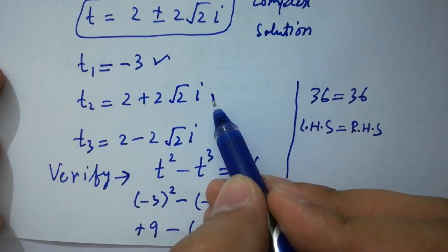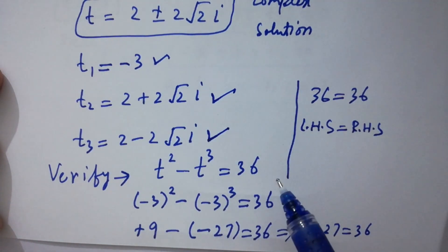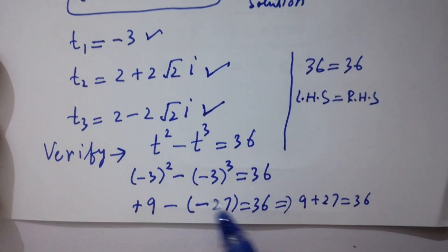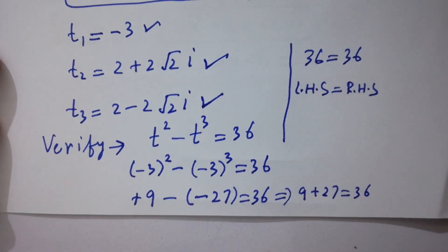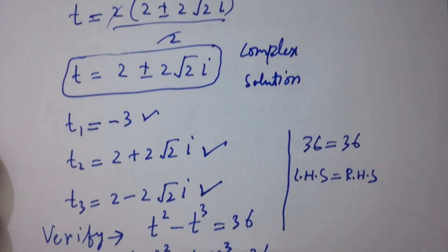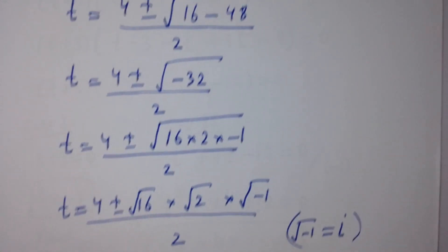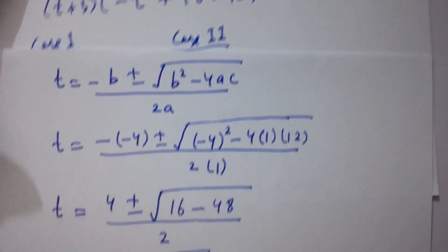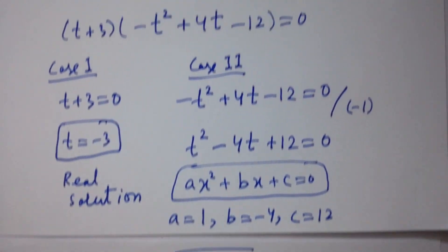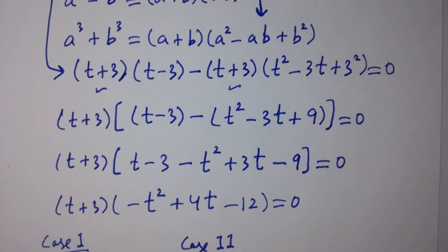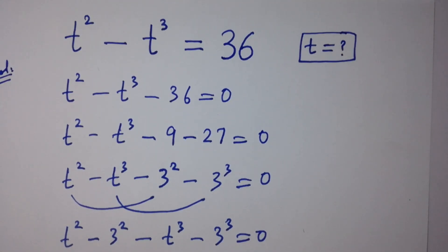This shows that t₁ equals minus 3, t₂ equals 2 plus 2 square root of 2 i, and t₃ equals 2 minus 2 square root of 2 i all satisfy the equation t-squared minus t-cubed equals 36. Thanks for watching this video. Please subscribe to this channel to get notifications of new videos, share with your classmates and friends, and visit the playlist to learn more.